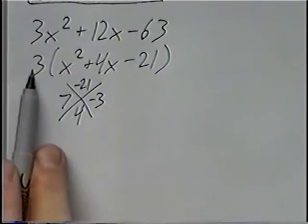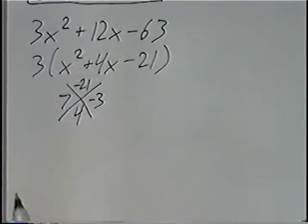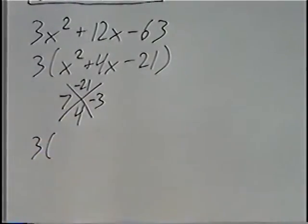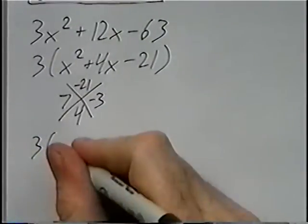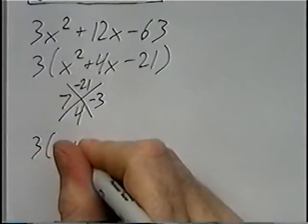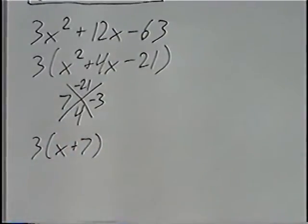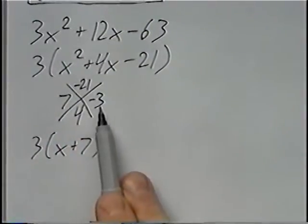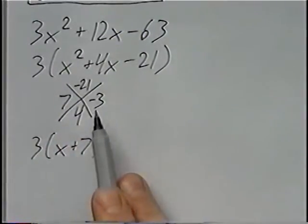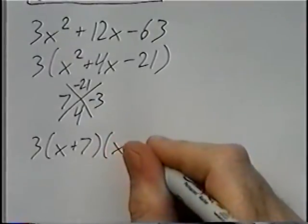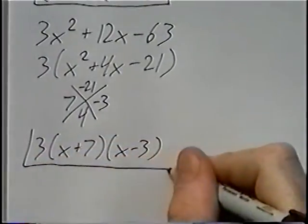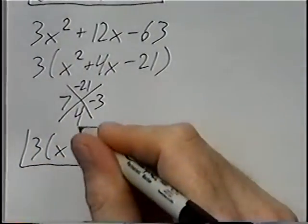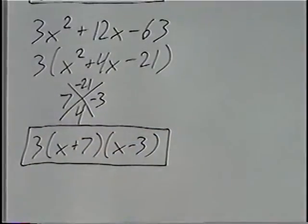Writing our answer, we'll still have the 3 from before that we factored out. The first factor with 7 paired with the variable x will be x plus 7. And our second factor with negative 3 would be x minus 3. So our final answer is 3 times (x plus 7) times (x minus 3).